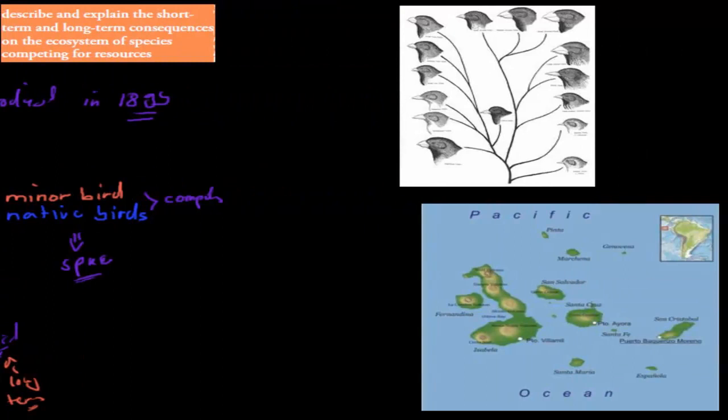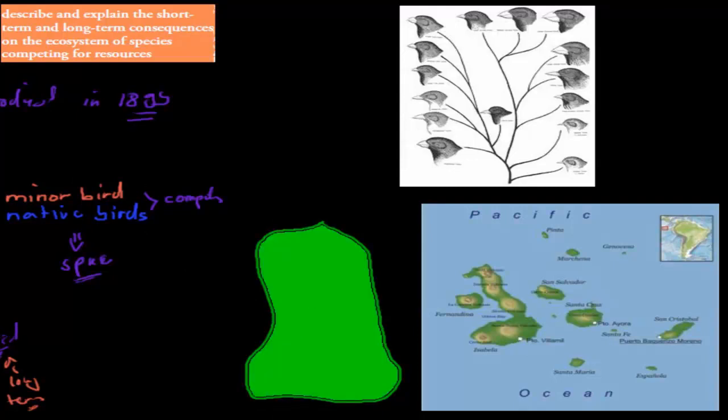But what can also happen is an example that happened with the Galapagos Islands. So the Galapagos Islands are part of South America. What I'm drawing here is our mainland. Mainland means it's a big part. For example, Australia would be the mainland. Then Tasmania would be the island coming off. So the mainland is the massive part. And then close by were these islands.